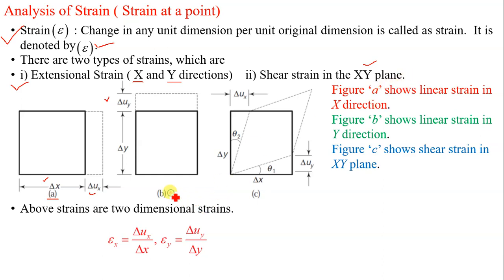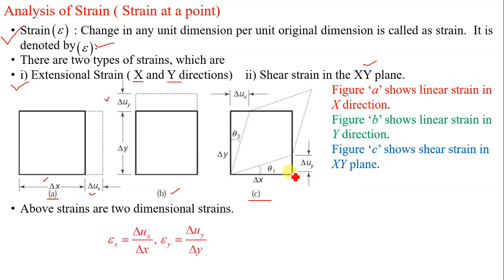Figure b shows linear strain in y direction because there is change in y direction, denoted by delta uy. Figure c shows shear strain in the xy plane because the distortion is taking place in the xy plane, bounded by x and y axes.